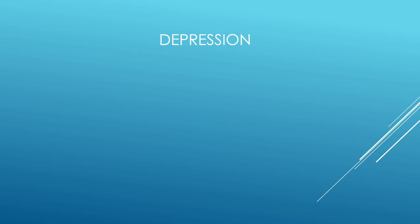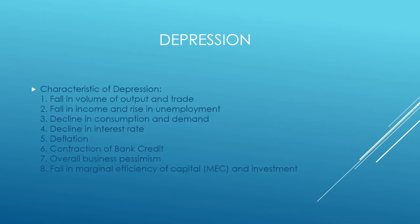Depression is the first stage of the trade cycle. Characteristics of depression are: falling volume of output and trade, falling income and rise in unemployment, decline in consumption and demand, and decline in interest rate.